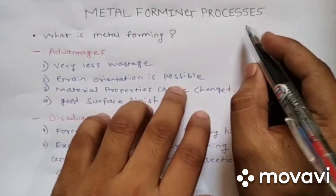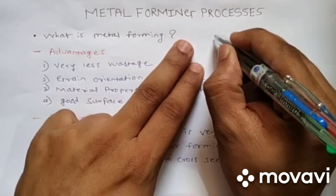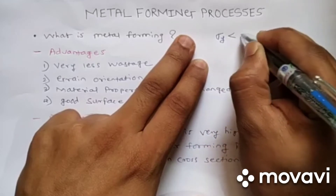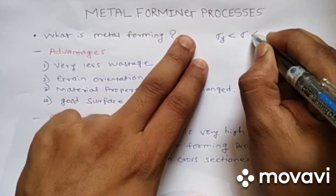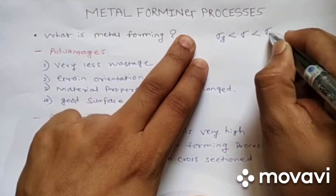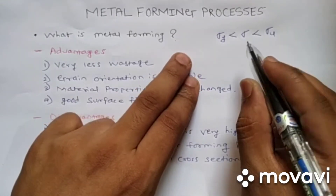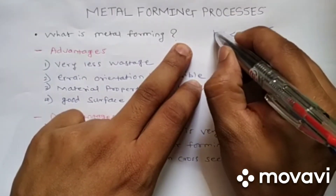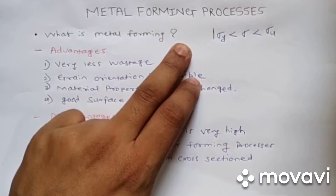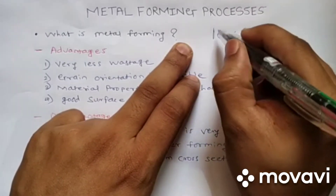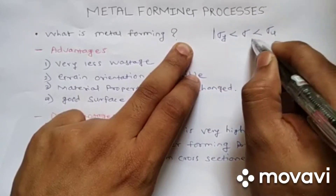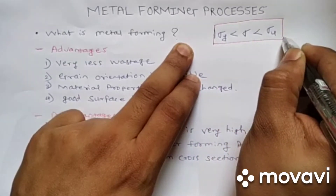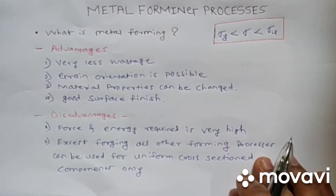The material enters the plastic zone. If sigma_y is the yield strength, sigma is the applied stress, and sigma_u is the ultimate strength, then the stresses induced must be greater than the yield strength and lesser than the ultimate strength. This is our forming process.